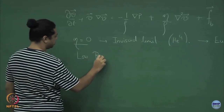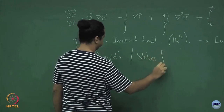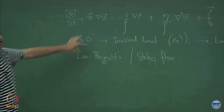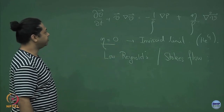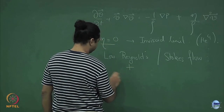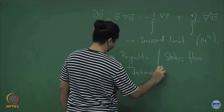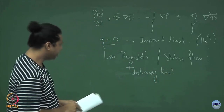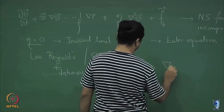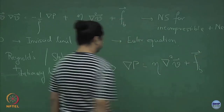The other limit, which is what we will be focusing on, is low Reynolds number or Stokes flow, where I neglect the inertial terms — meaning I neglect v dot del v — and I work in the stationary limit, neglecting del v del t as well. So this is low Reynolds number plus quasi-stationary. The only terms that survive are on the right-hand side, giving gradient of p equals eta Laplacian of v plus body forces.